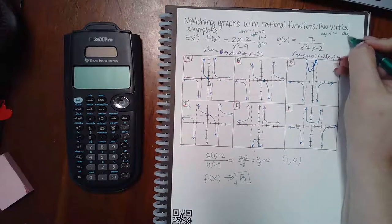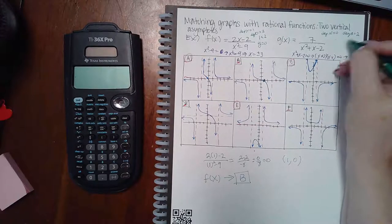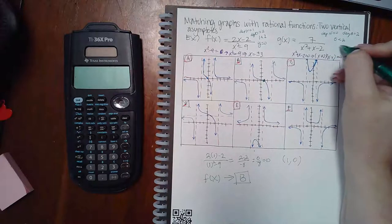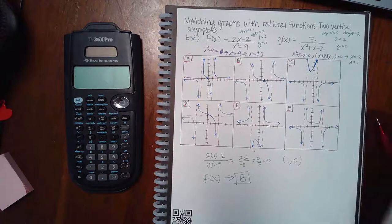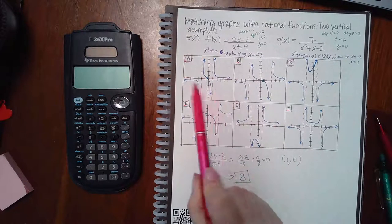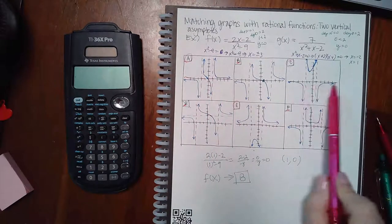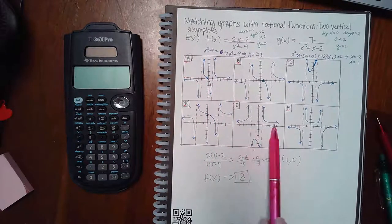For g(x)'s horizontal asymptote: the degree of the numerator is 0 and the degree of the denominator is 2, so 0 is less than 2, meaning we automatically have a horizontal asymptote at y equals zero. A, C, and E are all still good.